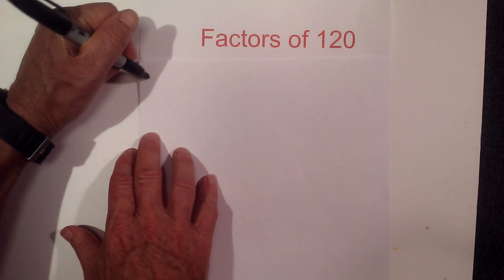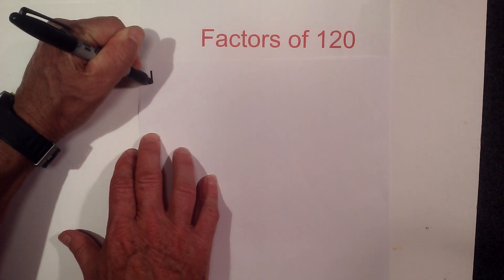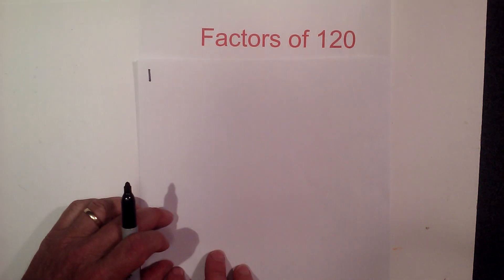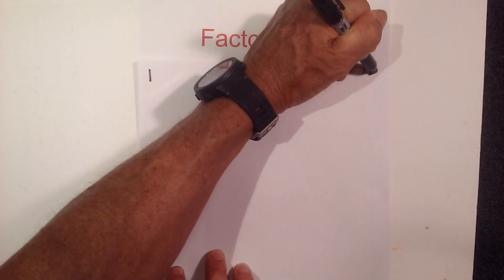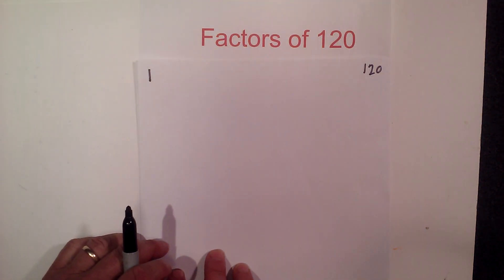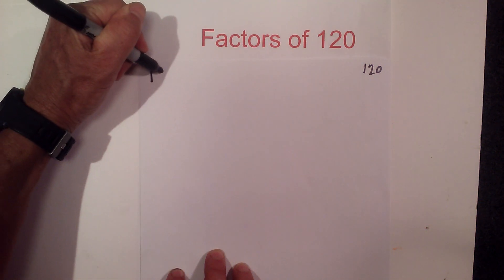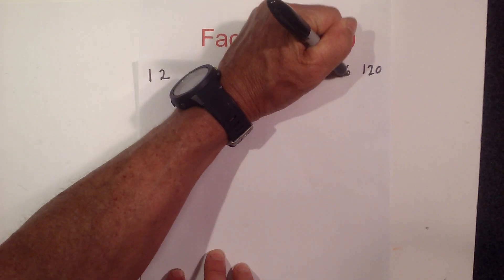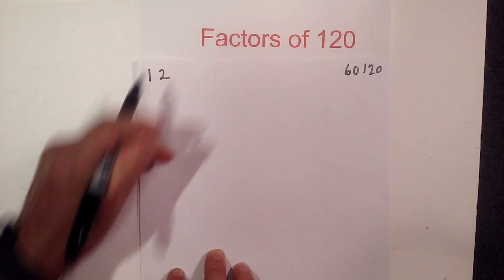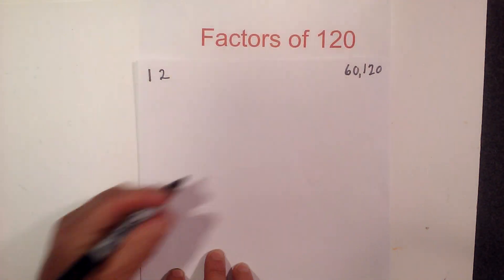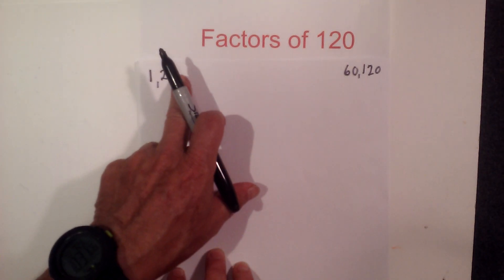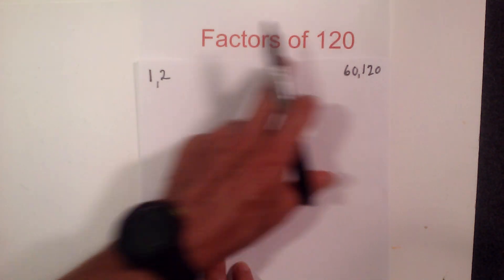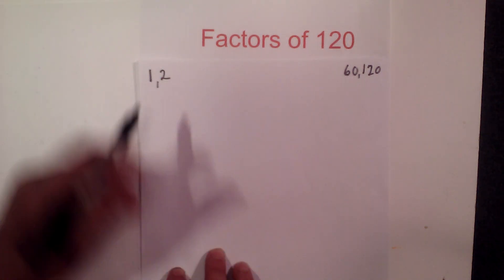There are quite a few factors for 120, and I like to complete it like this. I'm going to put 1 over here and 120 there, because I know 1 times 120 equals 120. Next we have 2 times 60 equals 120. What I'm doing is finding all the numbers in between that multiply together to equal 120.